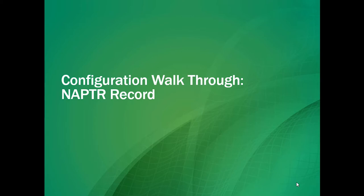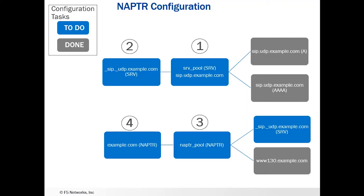In this module, we're going to do a configuration walkthrough and configure an APTA record on the BIG-IP. There are several things we're going to do and some things we are not going to do. The blue to-do and done items up in the upper left-hand corner are things I've already configured that you should already know how to do. Configuring A records and Quad A records are just like previously — you just have to put in the type. Instead, we're going to configure the SRV record. First we're going to configure the SRV pool, then we're going to configure the wide IP to use that.